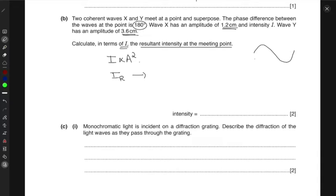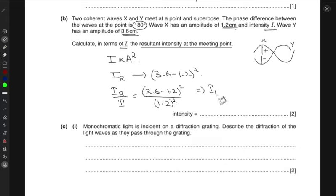So if we have one as this, the other one is like this. If this is X, this is Y, then the amplitudes of the waves are added in this way. So if this is positive, this is negative. So the resultant amplitude corresponding to resultant intensity would be 3.6 minus 1.2 squared. Which means that the ratio IR to I is then equal to 3.6 minus 1.2 squared divided by, corresponding to I, wave X's amplitude which is 1.2 squared. This gives you IR in terms of I as 4.0 I.